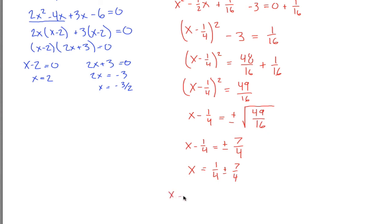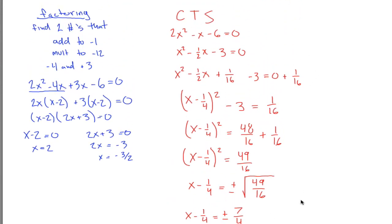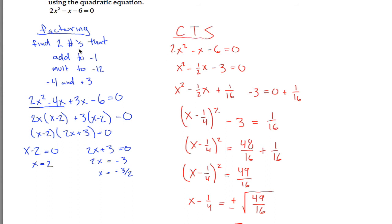So x = 1/4 + 7/4 = 8/4 = 2, or x = 1/4 - 7/4 = -6/4 = -3/2. Sure enough, that's what I got before, so I can solve this by completing the square. A little bit more difficult if you ask me.